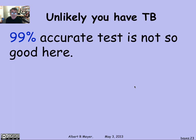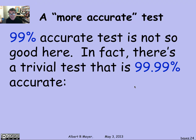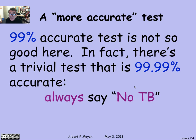So the 99% accurate test was not very useful for determining what action or treatment to take, given that a positive result still means only a 1 in 100 chance of having TB. You could wonder why your doctor even gave you the test. Moreover, there's an obvious test that's 99.99% accurate — always say no. After all, the probability is only 1 in 10,000 that you'll be wrong.